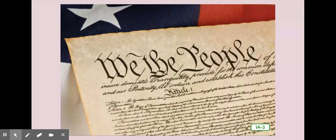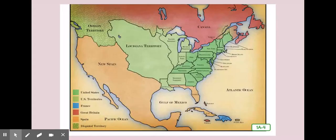James Madison also became the fourth president of the United States. For many years after the Revolutionary War, the United States grew larger and wealthier. New states such as Vermont, Kentucky, Tennessee, Ohio, and Louisiana were added, and new territories were also settled. In 1803, President Thomas Jefferson purchased the Louisiana Territory from France. This purchase more than doubled the size of the United States — you can see it right here on the map, this huge chunk of land Thomas Jefferson bought.